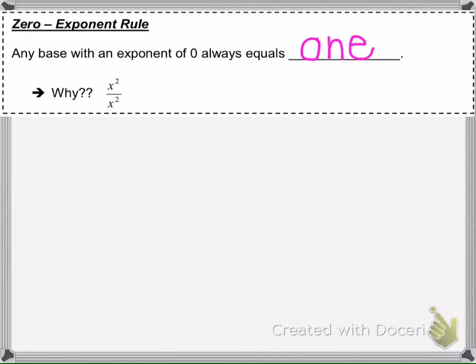So the zero exponent rule tells us any base that has an exponent of zero always equals one. Now I'm going to show you two different reasons why that rule works. The first one: